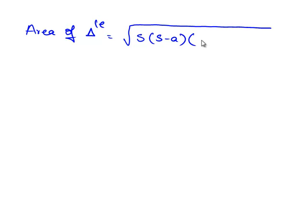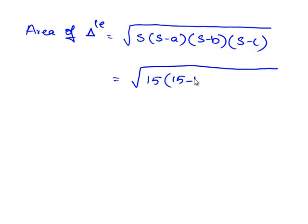Now we shall substitute the value of S in the formula. Area of the triangle is equal to square root of S times S minus A times S minus B times S minus C. This is equal to square root of 15 times 15 minus 12 times 15 minus 12 times 15 minus 6.